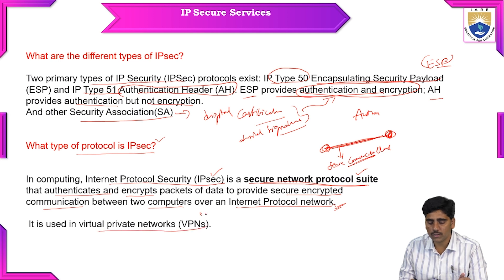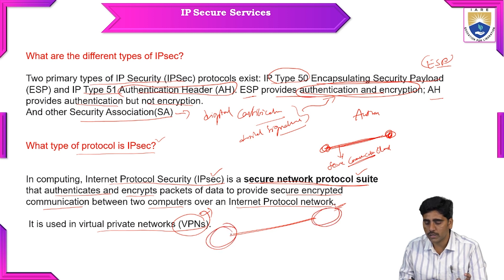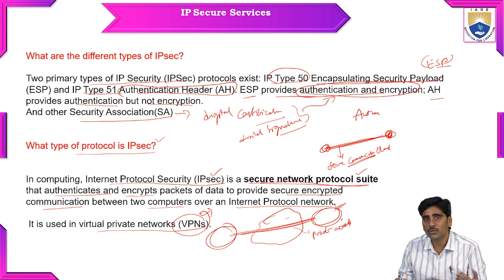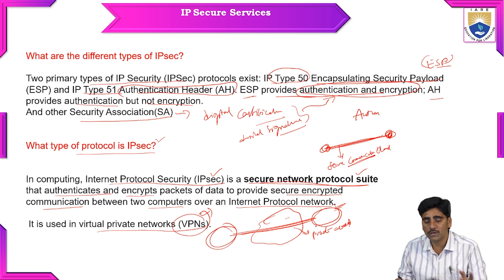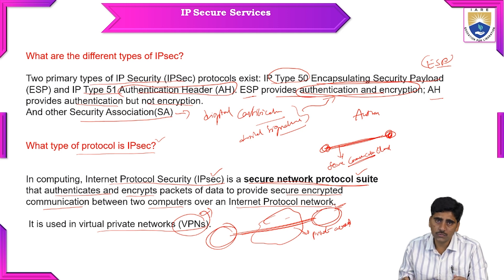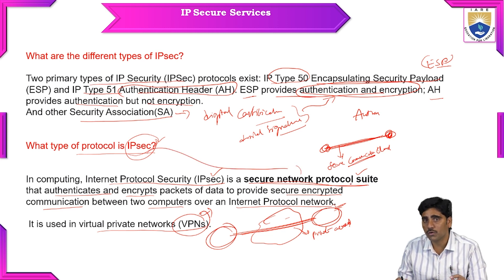For example, we use IPsec in virtual private networks. A VPN provides an encrypted communication channel, giving private access so that no one can read the data flowing through the channel and no one can attack it, because the channel is encrypted as well as secure. That is why we conclude that IPsec is a secure network protocol suite.